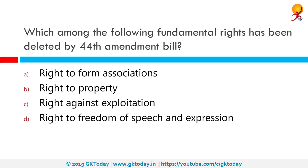Which among the following fundamental rights has been deleted by the 44th Amendment? The correct answer is the right to property. By the 44th Constitutional Amendment Act of 1978, the right to property was taken away from the category of fundamental rights and made a legal right. Article 19(1)(f), guaranteeing citizens the right to acquire, hold and dispose of property, and Article 31 relating to compulsory acquisition of property have been omitted. It was ensured that the removal of property from fundamental rights would not affect the right of minorities to establish and administer educational institutions.